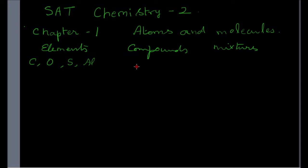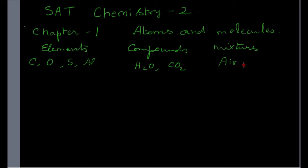As compounds we find water, carbon dioxide, and many more. Compounds contain two or more elements. As you find here, water contains the elements hydrogen and oxygen, and carbon dioxide contains elements carbon and oxygen. Mixtures contain two or more elements or compounds. The most common example of a mixture is air, which is a mixture of so many gases. And if you take a spoon of salt and put it in water, you get a mixture — a salt solution which contains salt and water.